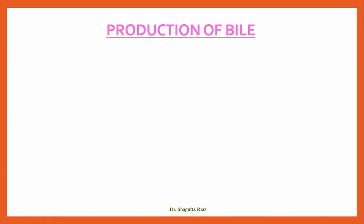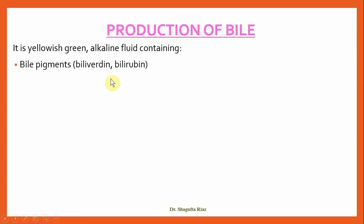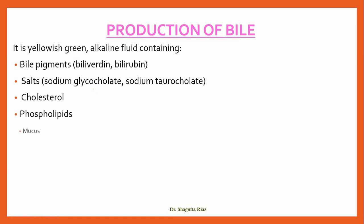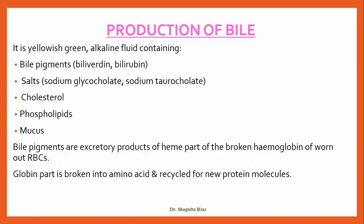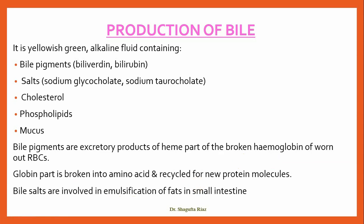The liver also plays a role in the production of bile. Bile is a yellowish-green alkaline fluid which contains bile pigments — biliverdin and bilirubin — as well as salts such as sodium glycocholate and sodium taurocholate, cholesterol, phospholipids, and mucus. Bile pigments are excretory products of the heme part of broken-down hemoglobin from worn-out RBCs. When older RBCs are broken down, the heme part of hemoglobin produces bile pigments as excretory products, while the globin part is broken into amino acids, which are recycled for new protein molecules. Bile salts are involved in emulsification of fats in the small intestine.